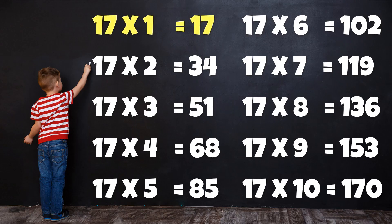Table of 17: 17×1=17, 17×2=34, 17×3=51, 17×4=68, 17×5=85, 17×6=102, 17×7=119, 17×8=136, 17×9=153, 17×10=170.